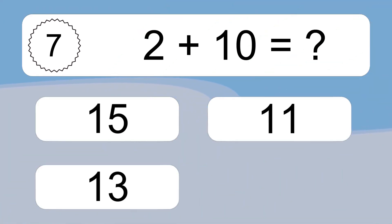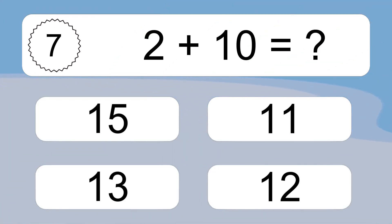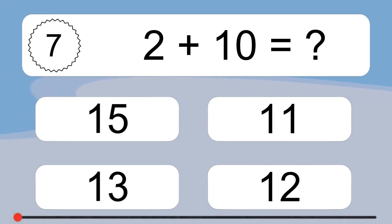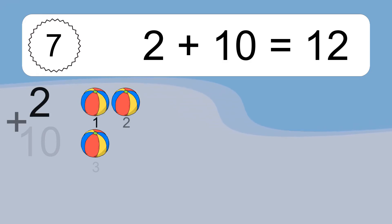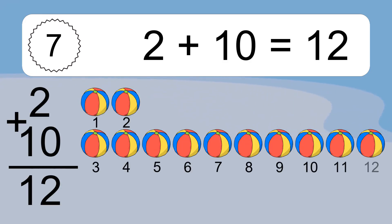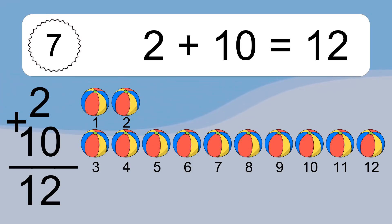2 plus 10 equals what? 2 plus 10 equals 12. Let's count it. 1, 2, 3, 4, 5, 6, 7, 8, 9, 10, 11, 12.